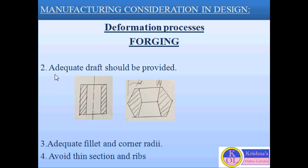Second consideration is that adequate draft should be provided. As you can see in the diagram, one part has no draft angle provided while the other has a draft angle on the outside and inside. Providing a particular draft angle in the forged part is very necessary for easy removal of the part from the die impression. Another consideration is adequate fillet and corner radii — there should be adequate fillet and corner radii in the forged part. Also avoid thin sections and ribs in the forged part.